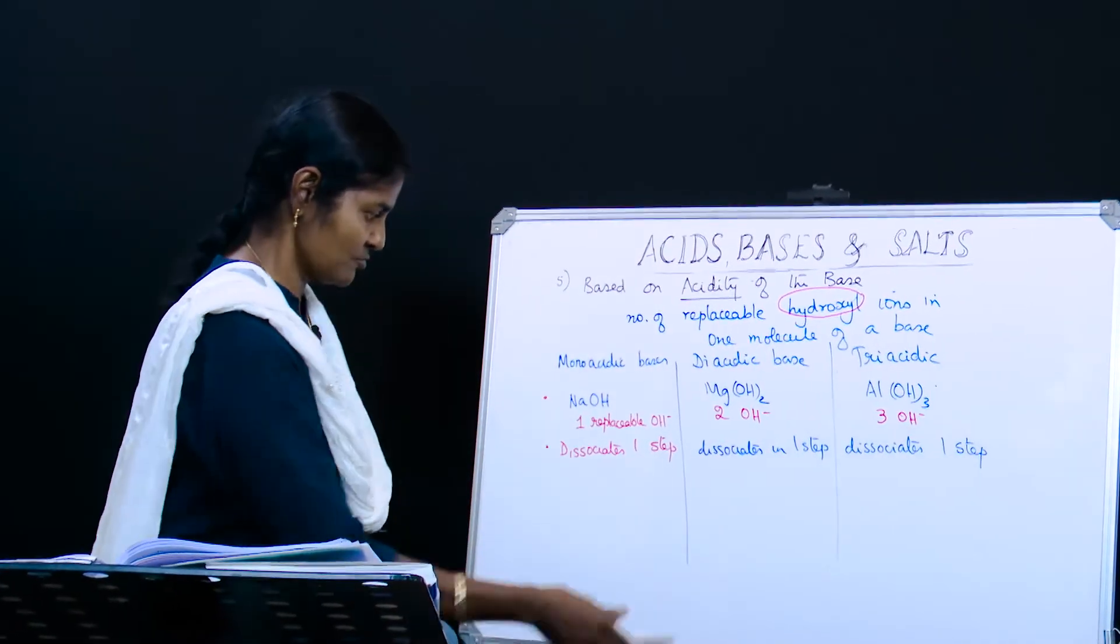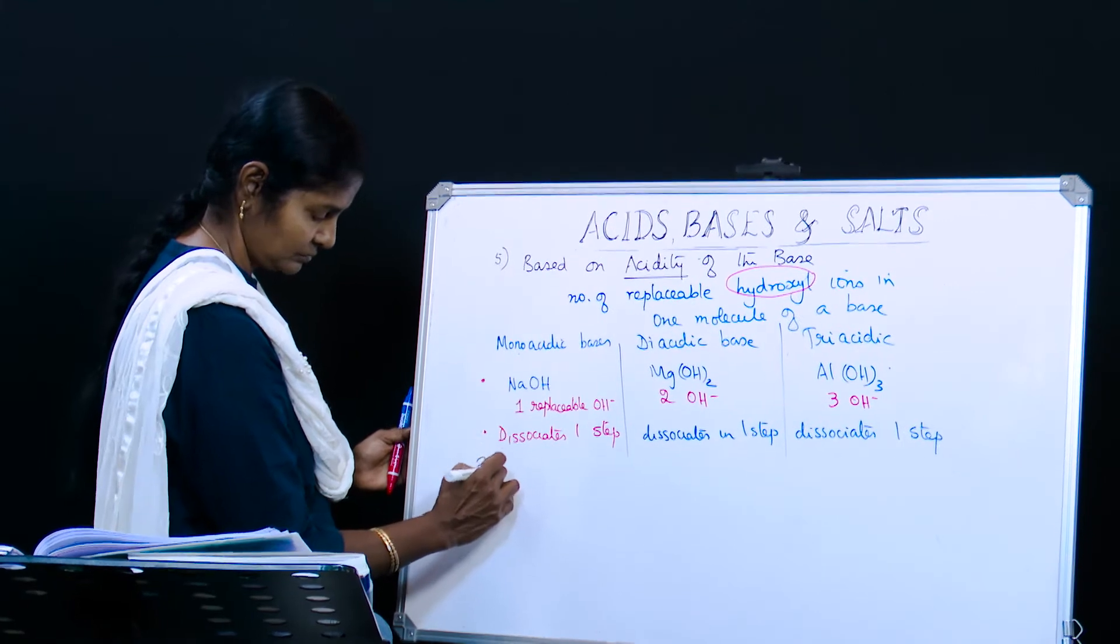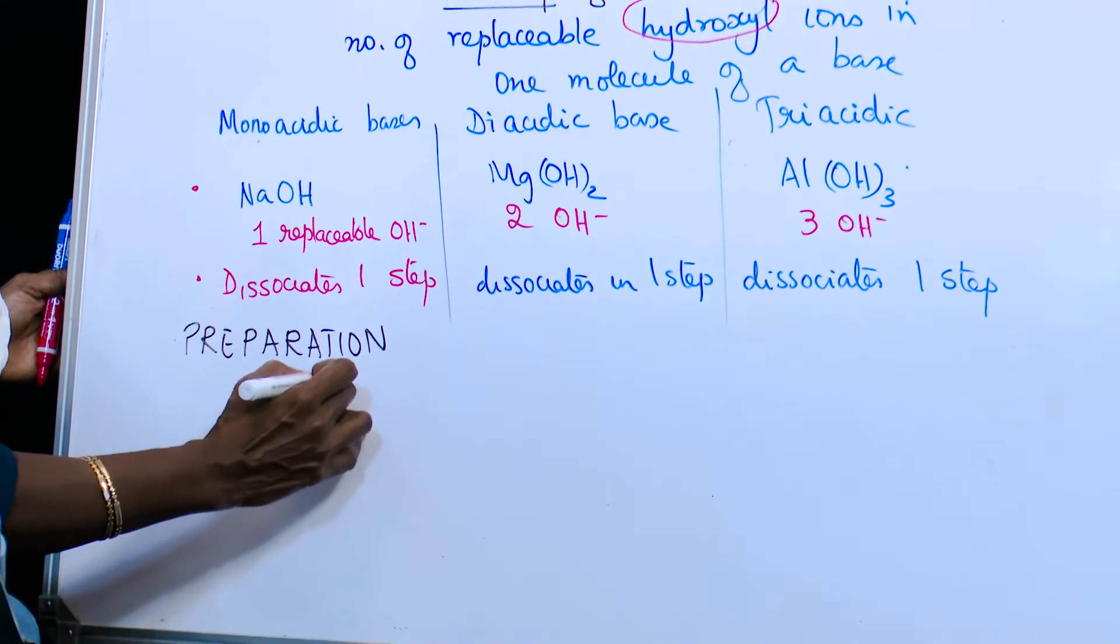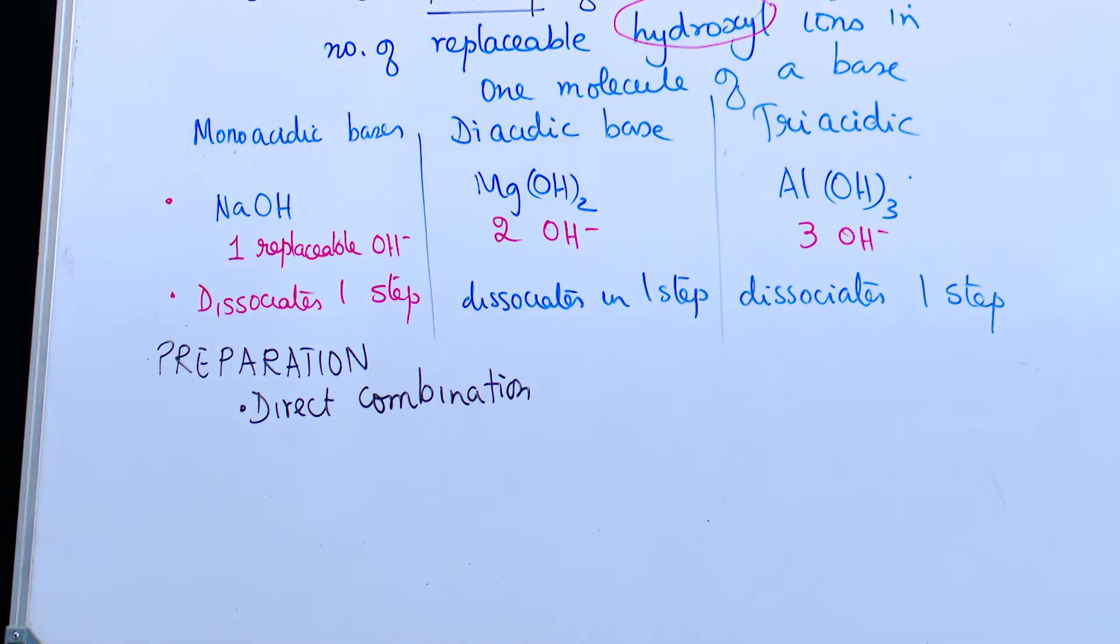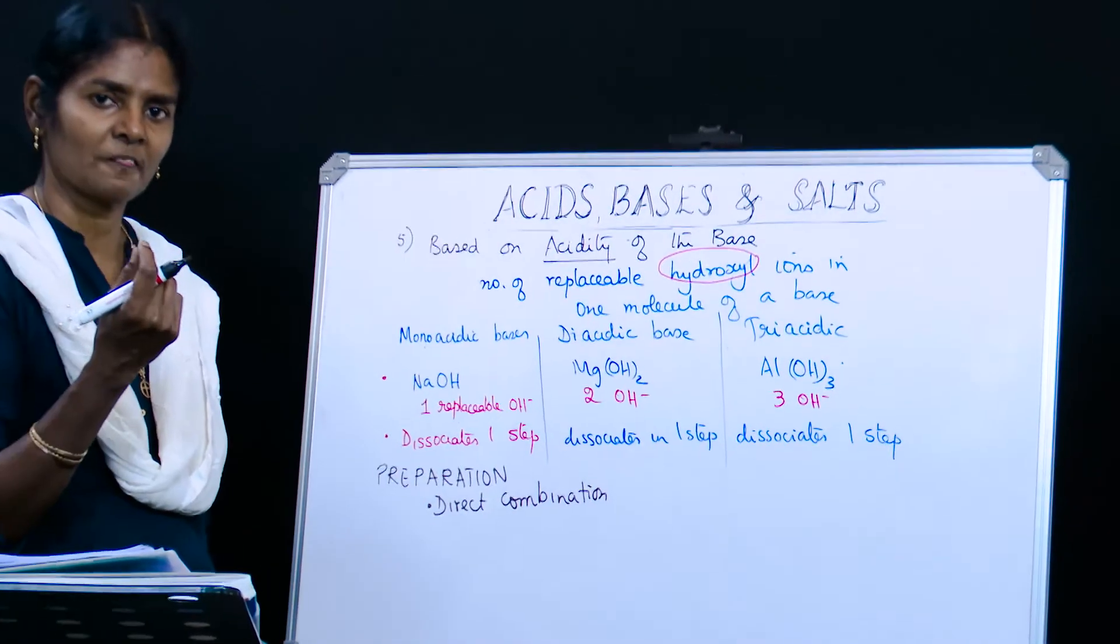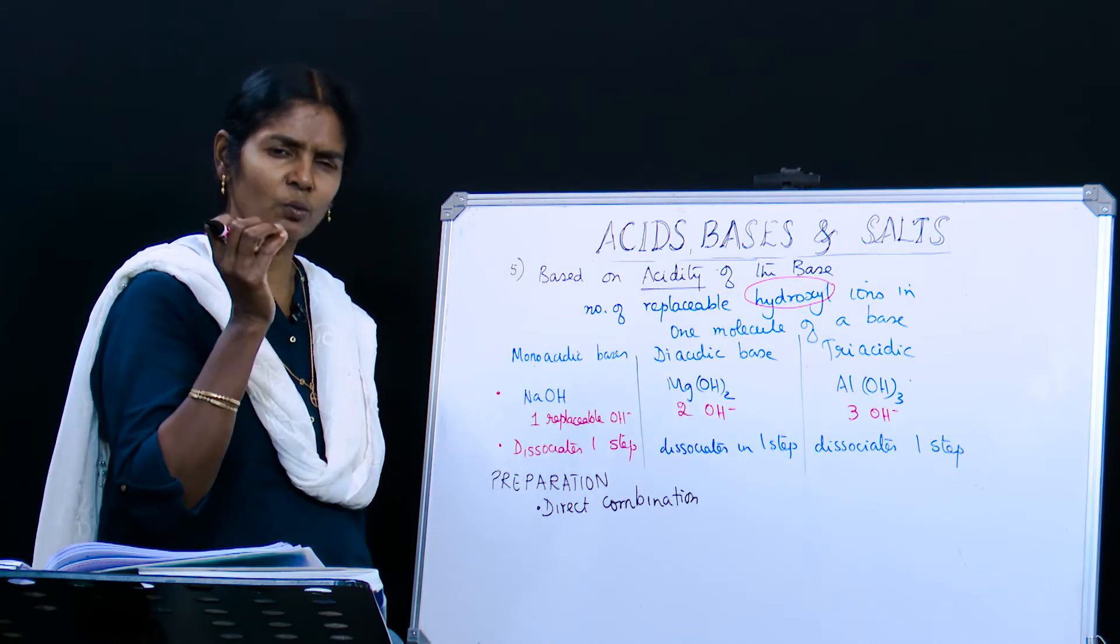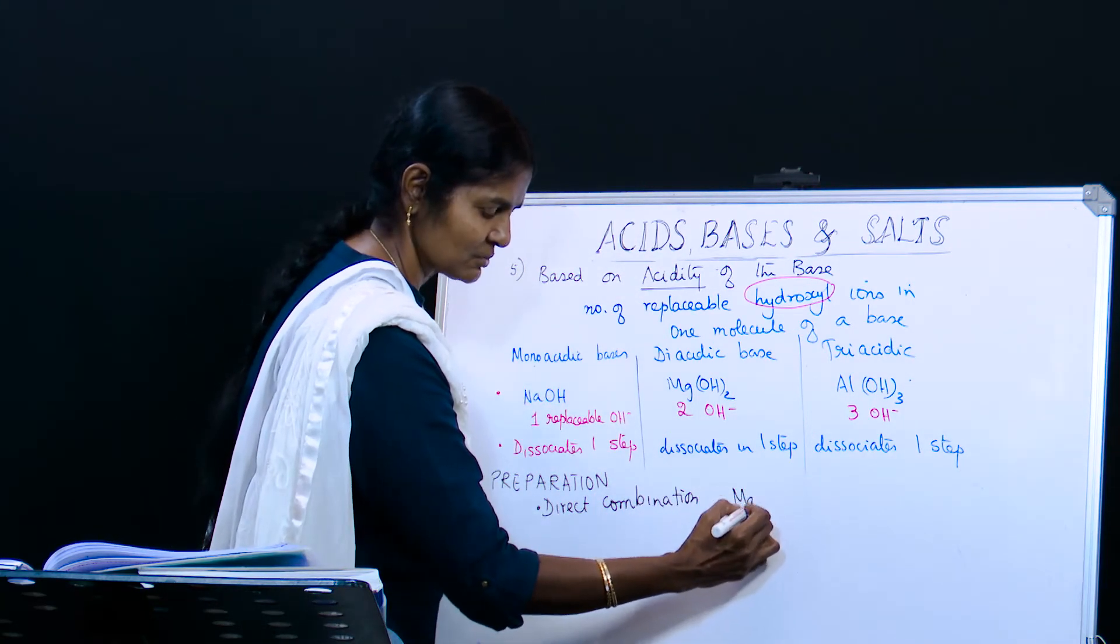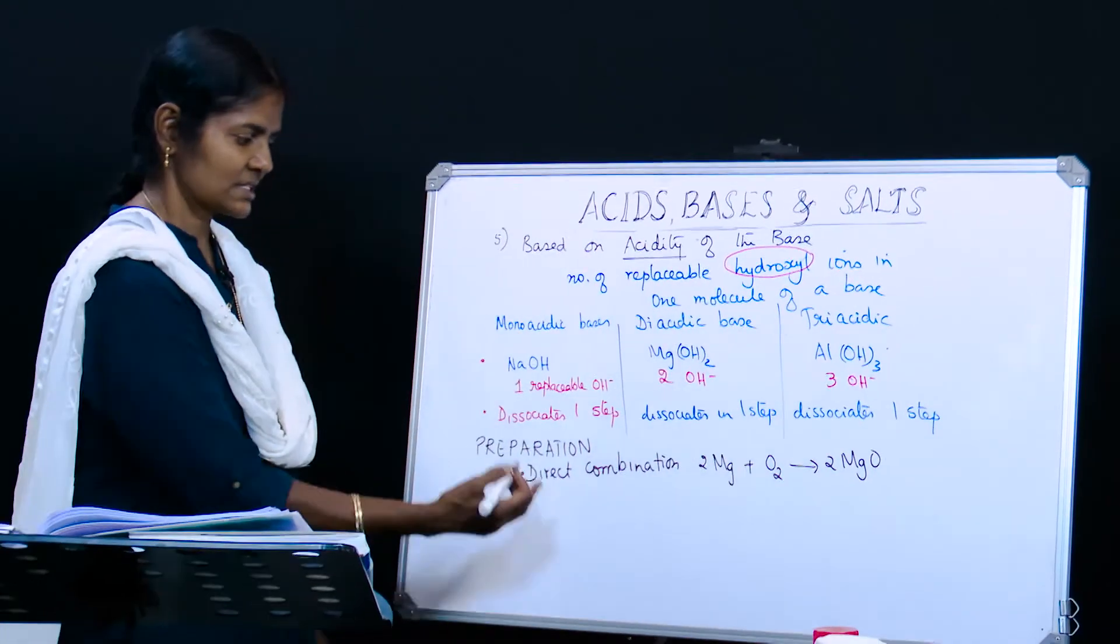So that brings us to the differences of classification to a close based on the five different principles. Now we move on to the preparation of bases, which is very short. The first preparation method would be direct combination - when two compounds or elements combine together to give a new one. For example, your sparklers or crackers during Diwali are made of magnesium. When it burns in air and you heat it, it starts burning and gives a white colored light, and it drops down as white colored solid. That is magnesium oxide.